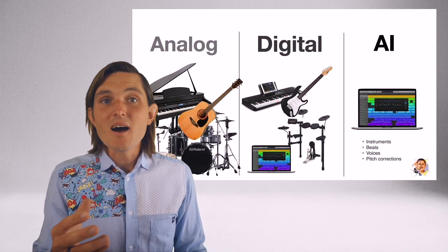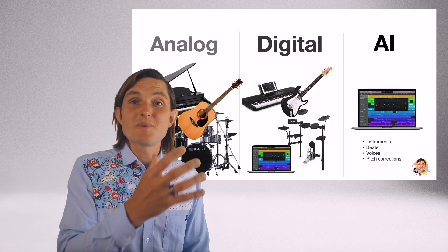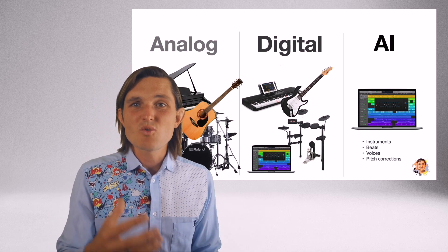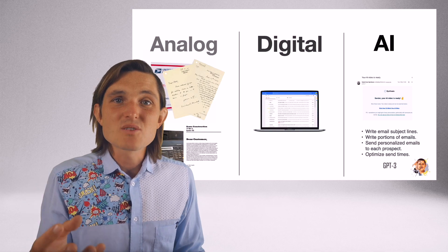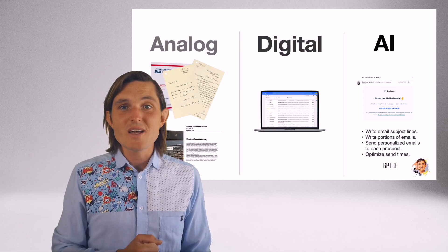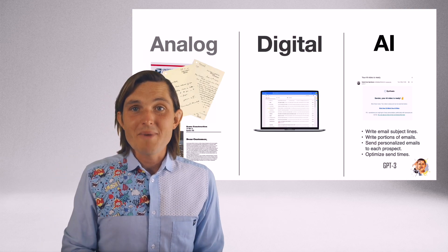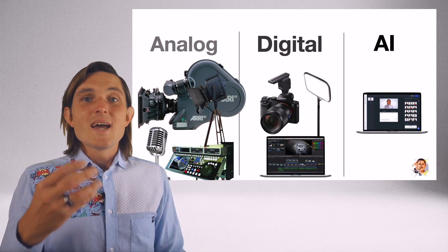We're moving through a general phase from digital to everything driven by AI. We already did that in music where we moved from analog instruments to digital instruments, so now most of the music being produced — beats, voices, pitch corrections — is all done by AI using computers. The same thing happened in written press, from writing and sending emails to most emails now being generated by computers using titles, content, and personalization, and mostly automatically sent out.